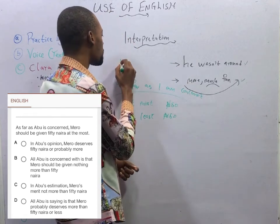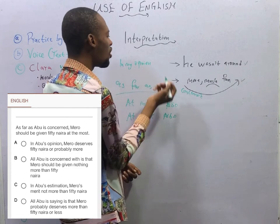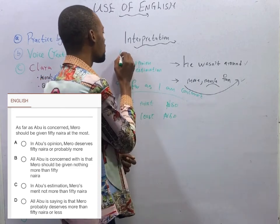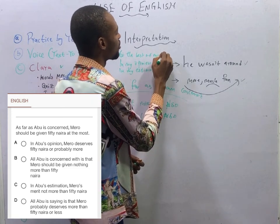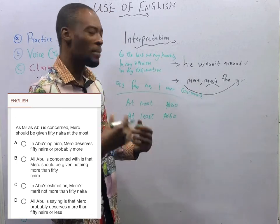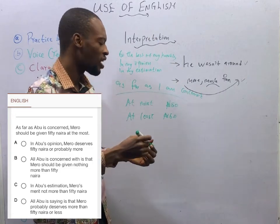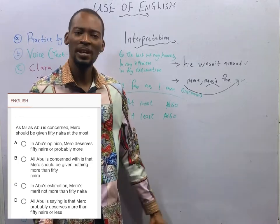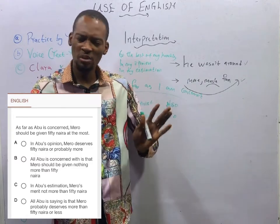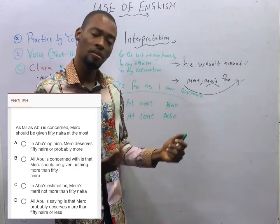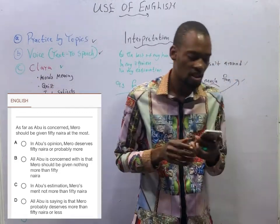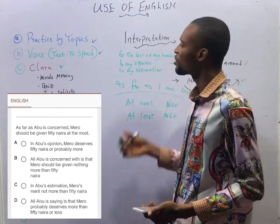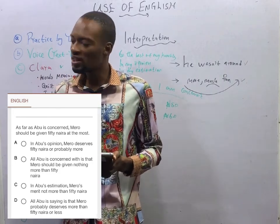As far as I am concerned simply means in my opinion, in my estimation, or to the best of my knowledge — that is what it means. If I say 'as far as I am concerned, you shouldn't go,' it means in my own opinion, the best I can say is you can't go. So, as far as Abu is concerned, Mero should be given 50 Naira at the most — in his estimation, Mero should be given 50 Naira or less. Mero doesn't deserve more than 50 Naira.